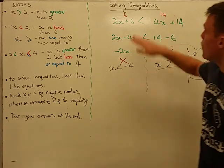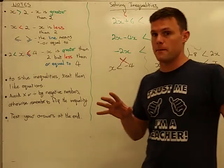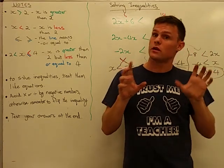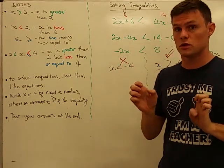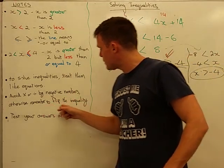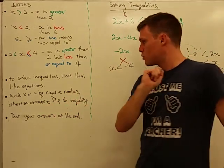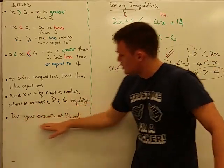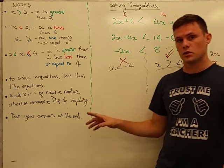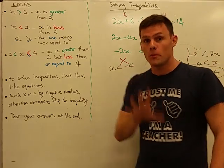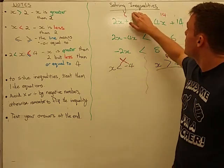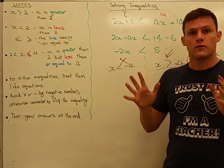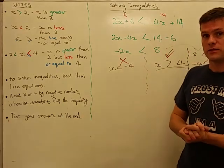So please either avoid negatives straight from the beginning by keeping your unknown on the side you're used to, or remember to flip the inequality when you divide through by a negative. And please, please, please make sure you test your answers at the end to make sure that they work. I hope that's given you a little more understanding in solving inequalities.